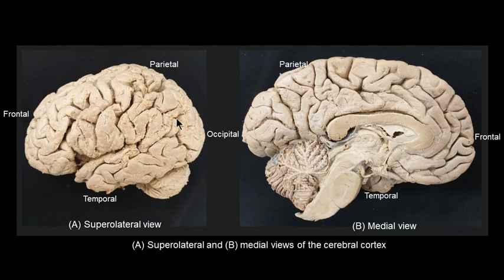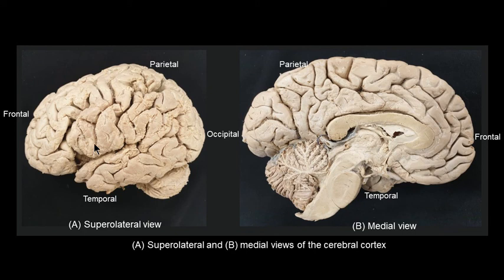If you look at the left, this is the lateral or supralateral view of the cerebral cortex. Once again, the cerebellum at the back means that this is the posterior end of the brain — the occipital lobe at the back and the frontal lobe in the front. You can also see a prominent sulcus here, which is the lateral sulcus. The central sulcus is situated right over here, more or less in the center, separating the frontal lobe in the front from the parietal lobe at the back.